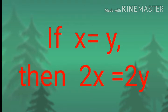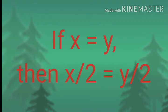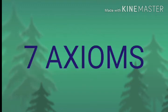The seventh axiom is: things which are halves of the same things are equal to one another — halves meaning the plural form of half. That is, if x equals y, then x divided by 2 equals y divided by 2. So these are the seven axioms given by Euclid.